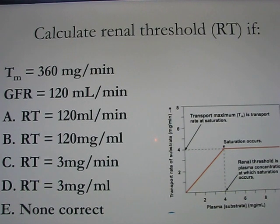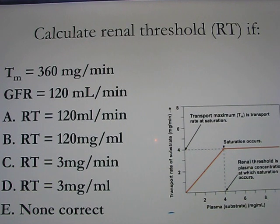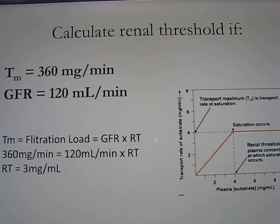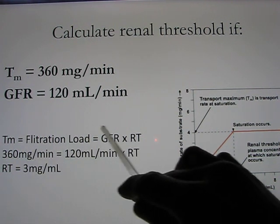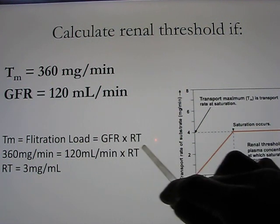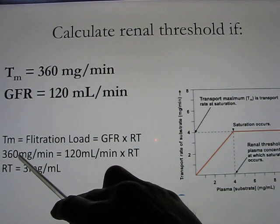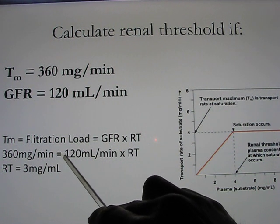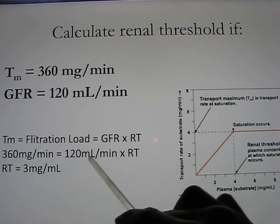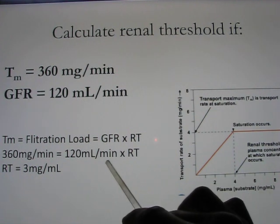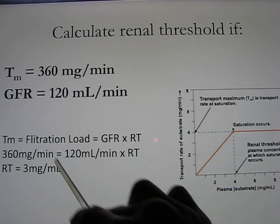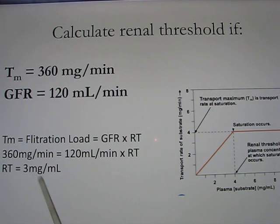We can calculate the renal threshold using: Transport Maximum = GFR × Renal Threshold. If the transport maximum is 360 mg/min and the GFR is 120 ml/min, then the renal threshold equals 360 ÷ 120 = 3 mg/ml. So given the transport maximum and GFR, you can calculate the renal threshold using this equation.